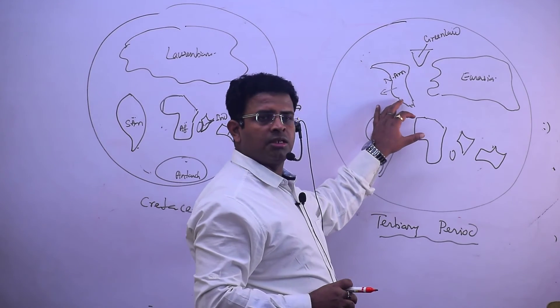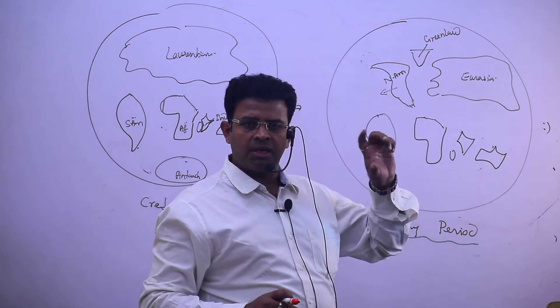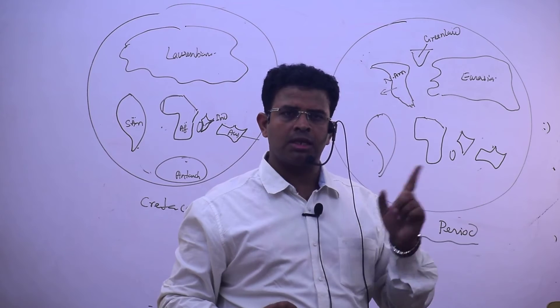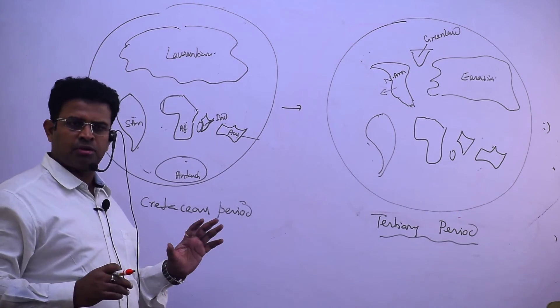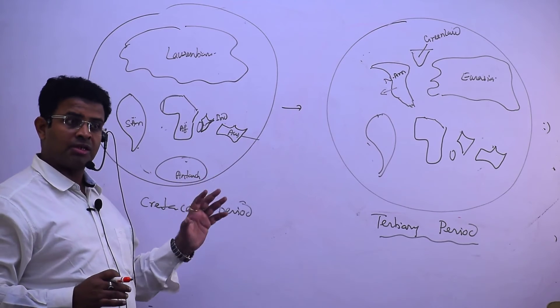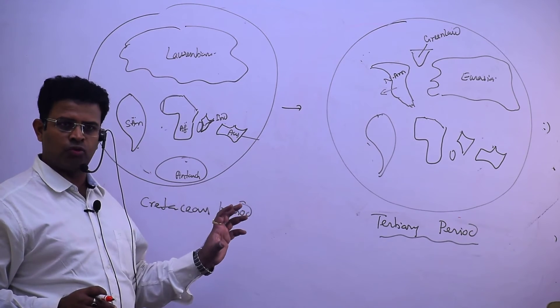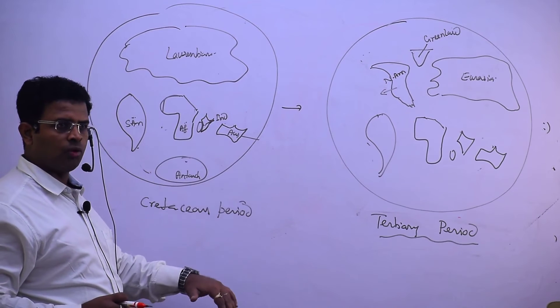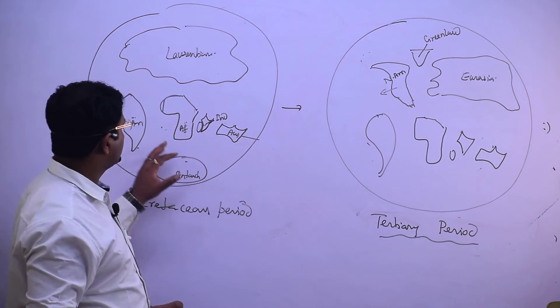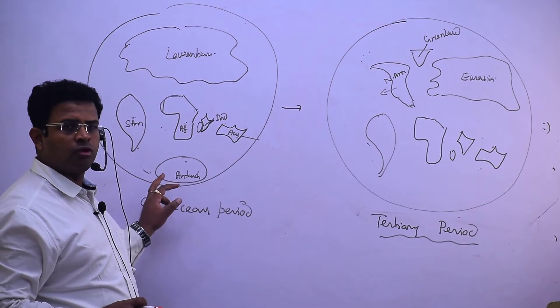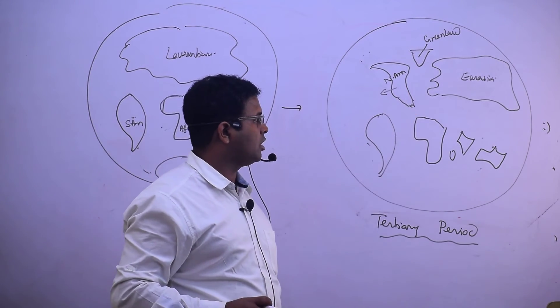This is the fourth figure: Carboniferous, Jurassic, Cretaceous, and Tertiary. Carboniferous - drift process started. Jurassic - drift has taken place in two types: Laurentian and Gondwana. In the Cretaceous, we have seen the division of Gondwana. And in the Tertiary, we have seen the division of